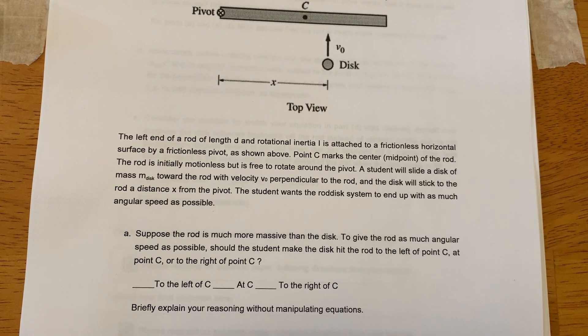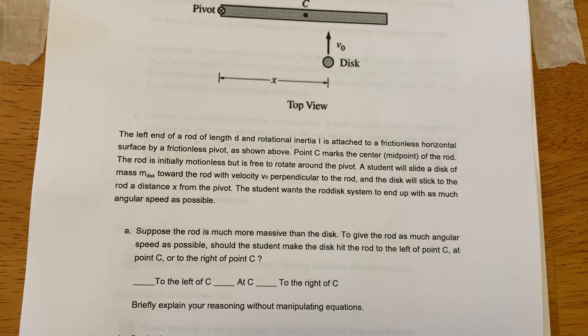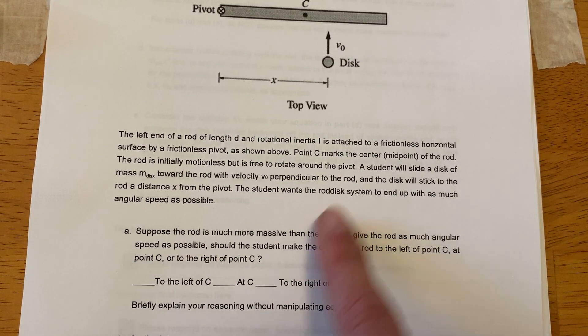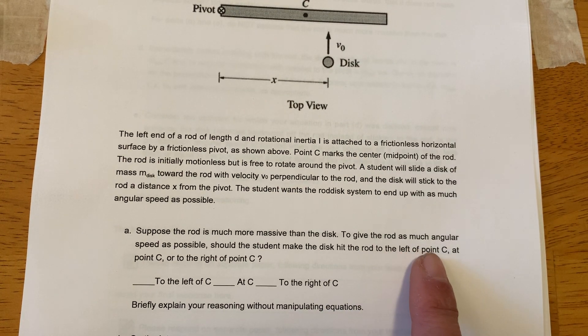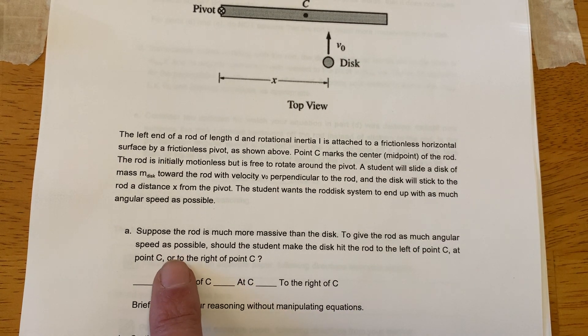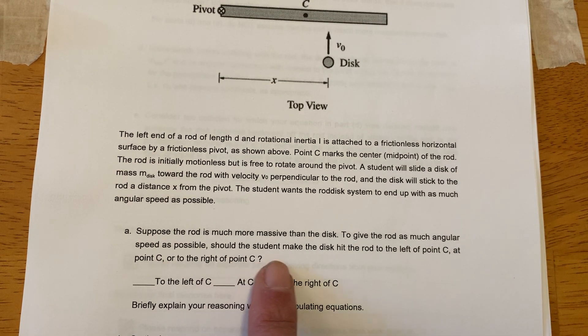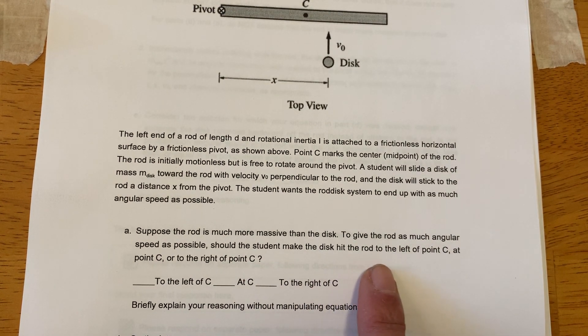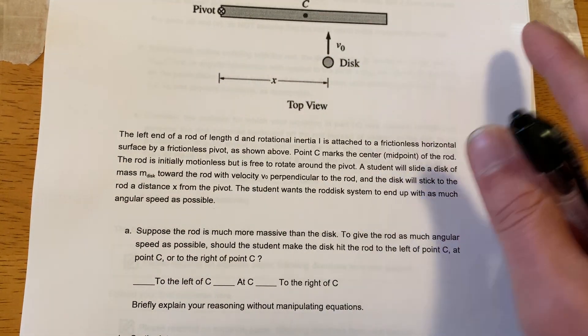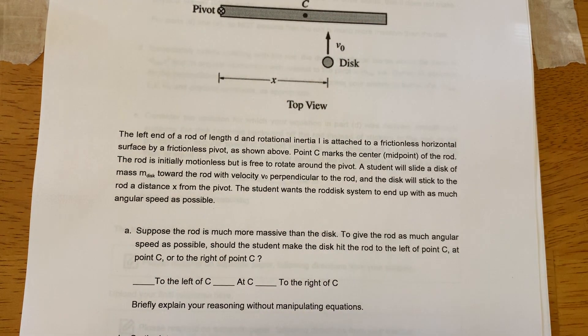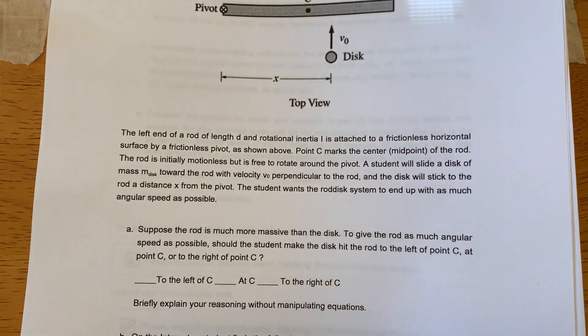So it asks a couple of questions. Suppose the rod has much more mass than the disc. To give the rod as much angular speed spinning around this pivot point as possible, should the student make the disc hit the rod to the left of C, at C, or to the right of C? Alright, so let's take a look.